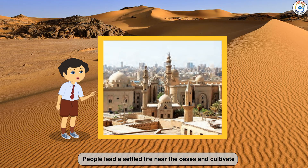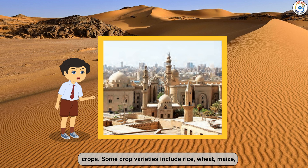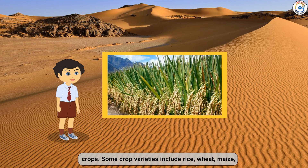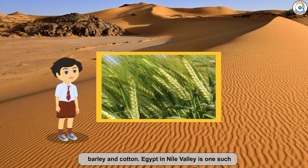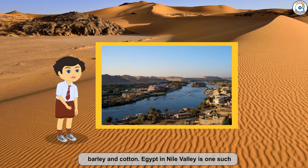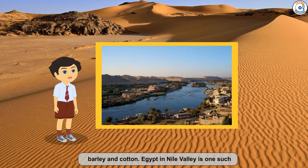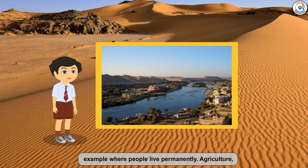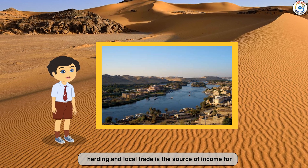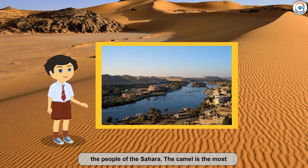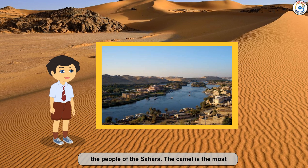People lead a settled life near the oasis and cultivate crops. Some crop varieties include rice, wheat, maize, barley, and cotton. Egypt in the Nile Valley is one such example where people live permanently. Agriculture, herding, and local trade are the sources of income for the people of the Sahara.